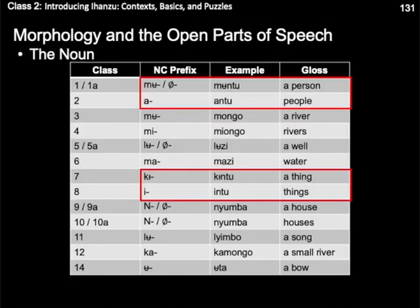Note also that the noun class adds lexical information. The stem for the nouns of both classes 1/2 and 7/8 is actually the same, but when given a class 1/2 prefix it means 'person', and when given a class 7/8 prefix it means 'thing'. In fact, many nouns for persons are of class 1/2, and many nouns for inanimate entities are of class 7/8. As such, we might want to think of this stem as meaning something like 'entity', with the class prefixes telling us everything else.